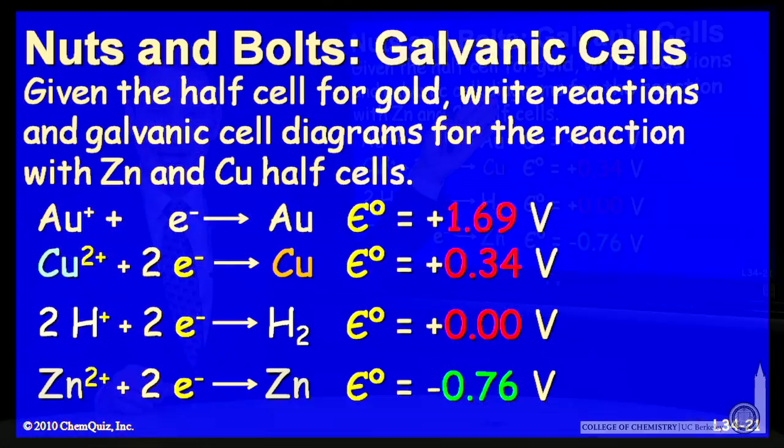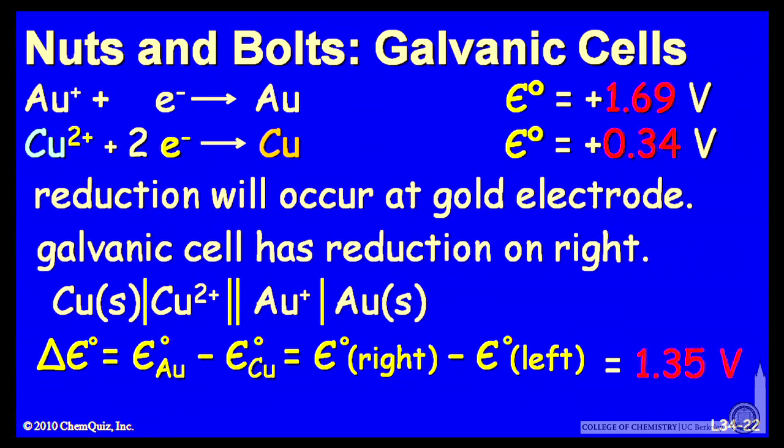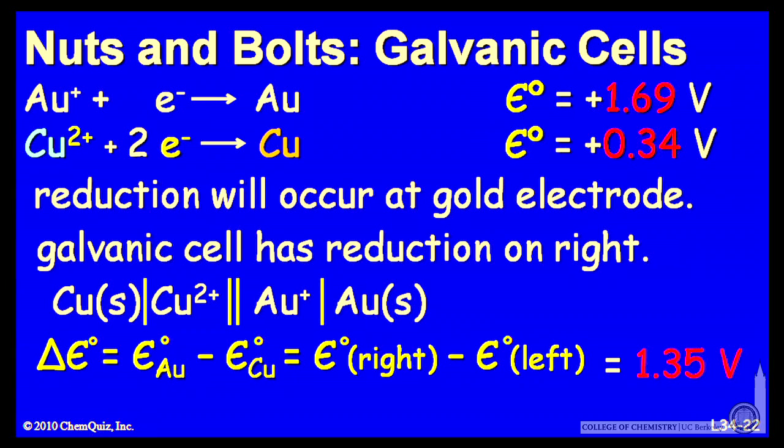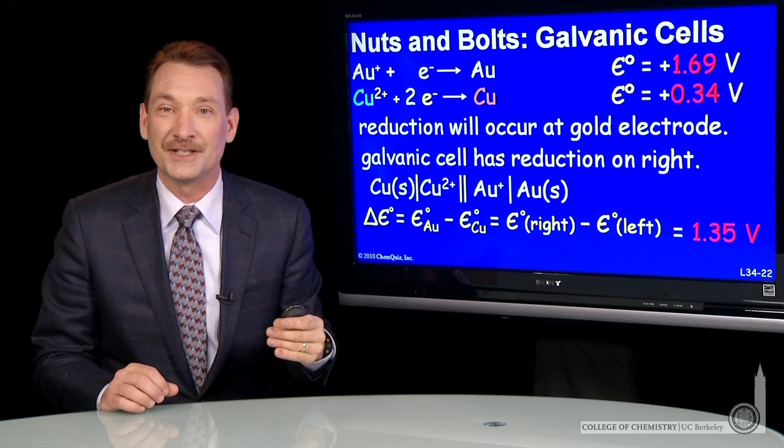Well, here's my table now of standard reduction potentials. Let's use that to make galvanic cells. And here's how we do it. Here's gold and copper compared. And when you compare gold and copper, you see gold has the higher reduction potential.